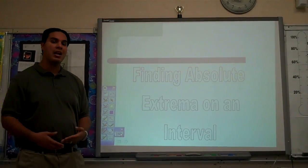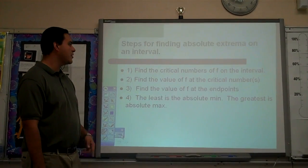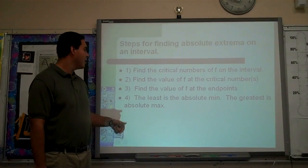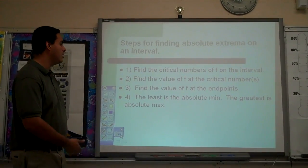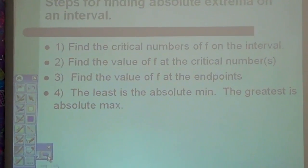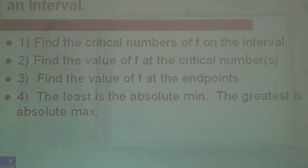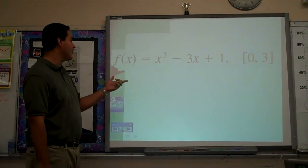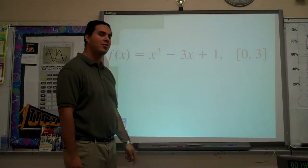Now analytically, we can actually find the absolute maximums and absolute minimums on an interval. Here are the four steps to finding the absolute extrema on an interval — pause the video if you need to copy them down. Our first example for finding absolute max and absolute min is f of x equals x cubed minus 3x plus 1 on the interval from 0 to 3.